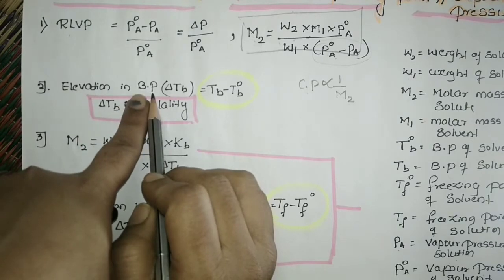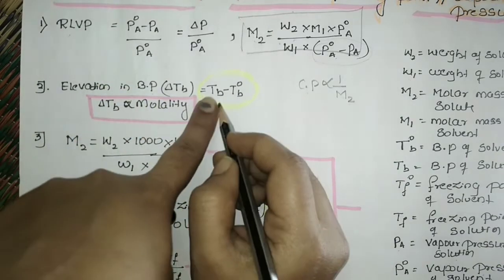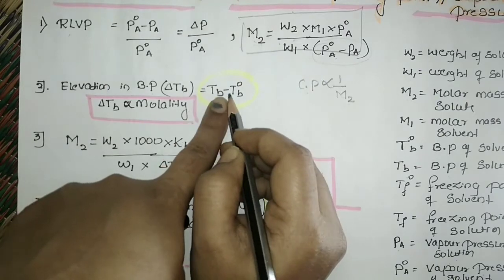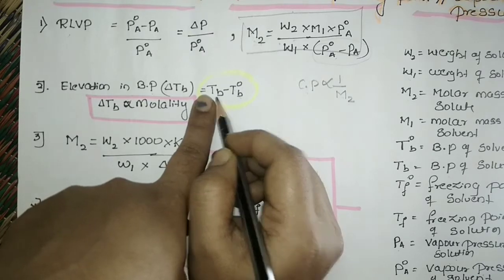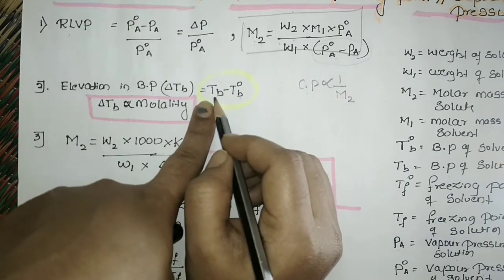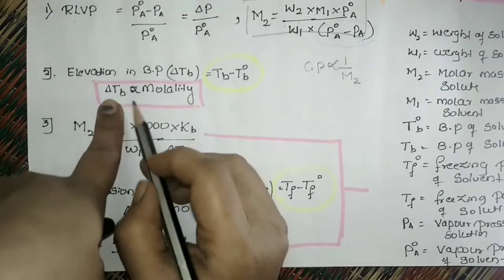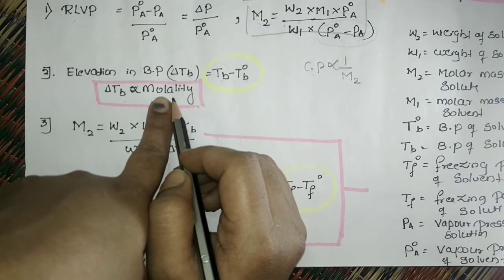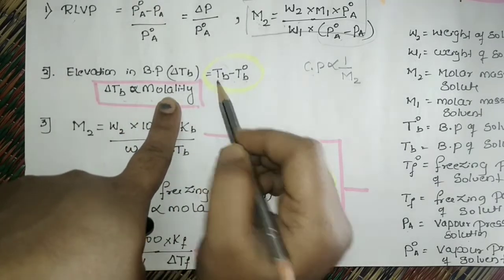The next formula is elevation in boiling point, which is the change in boiling point of the solution and the solvent, denoted by delta Tb. Delta Tb equals Tb minus T0b. Tb is the boiling point of the solution, T0b is the boiling point of the solvent. The solution always has a higher boiling point than the solvent because it contains solute particles acting as impurities. Delta Tb is directly proportional to molality. Molality is used because it is temperature independent.